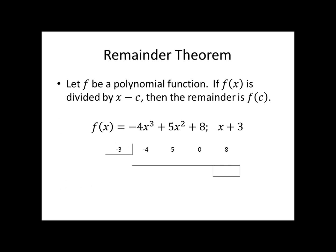Our Remainder Theorem says that if we have a polynomial function being divided by the binomial x minus c, then the remainder is equal to what we get if we plug that c value into the polynomial. We have a polynomial for an example: f(x) = -4x³ + 5x² + 8, and we want to divide it by the binomial x + 3. Remember, our theorem deals with dividing by x minus c, so my c value here is actually negative 3.